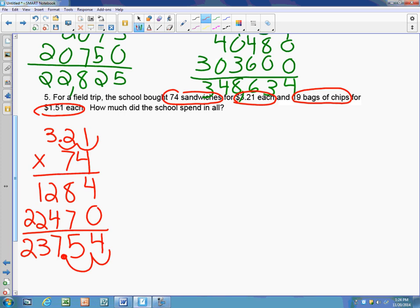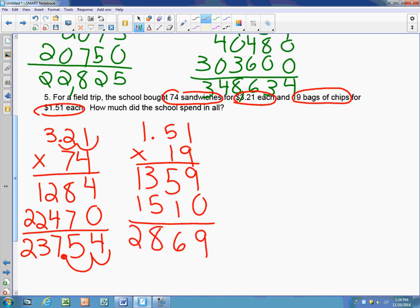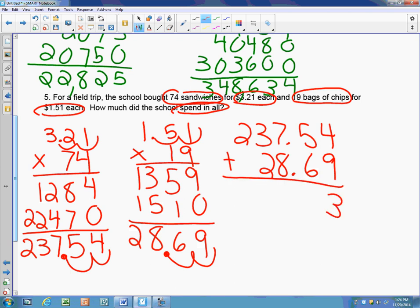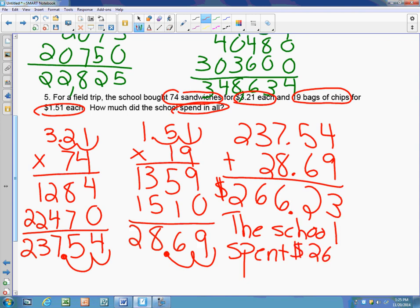That's just for sandwiches, and I have to figure out the bag of chips. So now I'm going to figure out my bag of chips. I had 19 bags of chips at $1.51 each. And once again, I need to make sure that there's a decimal, so I have to jump two spots. Now I know my chips and my sandwiches, and it wants to know how much did the school spend in all. So I have to add my sandwiches to my chips. We line up our decimals to add so our place values are lined up. And I end up with $266.23. Then I would write my sentence that the school spent $266.23.